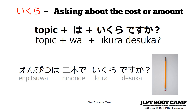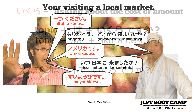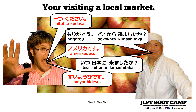You want to buy the apple, so you say 'Hitotsu kudasai' — one, please. Ojisan replies 'Arigatou. Doko kara kimashita ka?' — where are you from? You reply 'Amerika desu' — I'm from America. He then asks 'Itsu Nihon ni kimashita ka?' — when did you come to Japan? And your reply is 'Suiyoubi desu' — Wednesday.